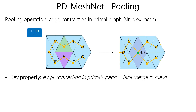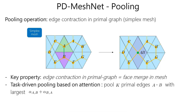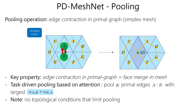We define pooling as an edge contraction in the primal graph. Its key property corresponds to forming clusters of faces in the mesh. In particular, our network learns which edges to pool based on the sum of the attention coefficients over them. Contrary to previous methods, this operation is not limited by topological conditions.